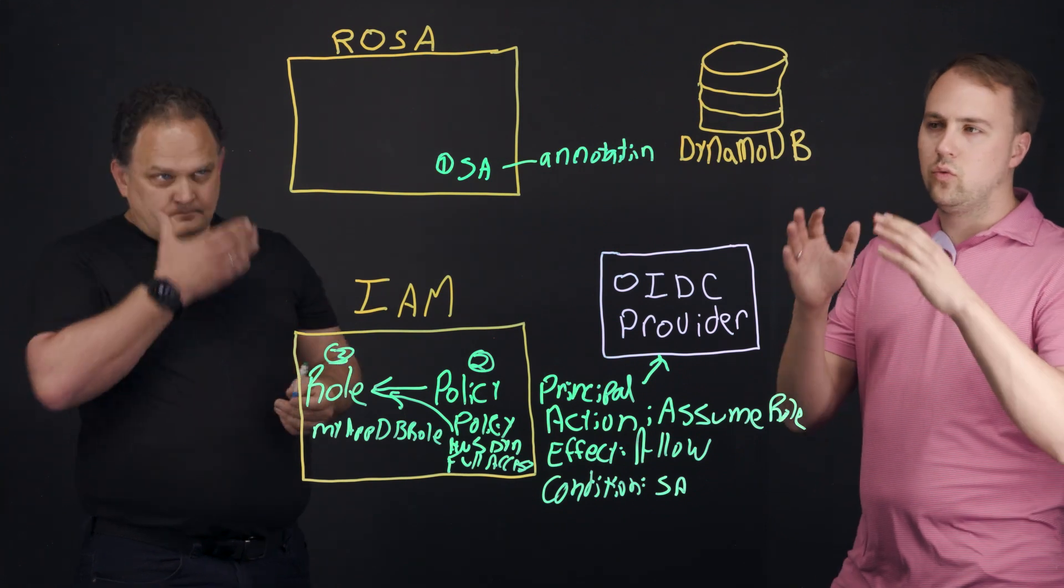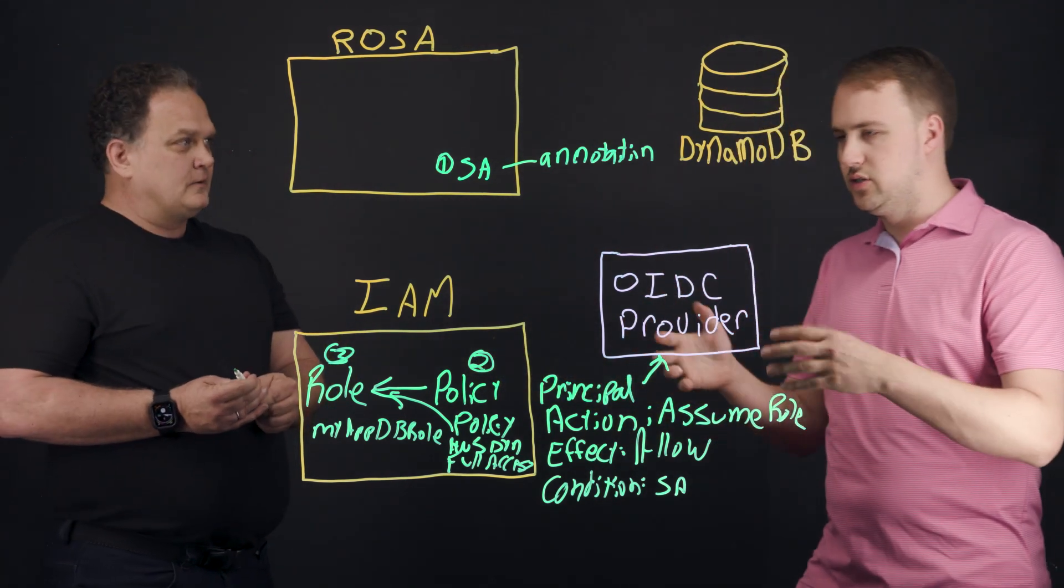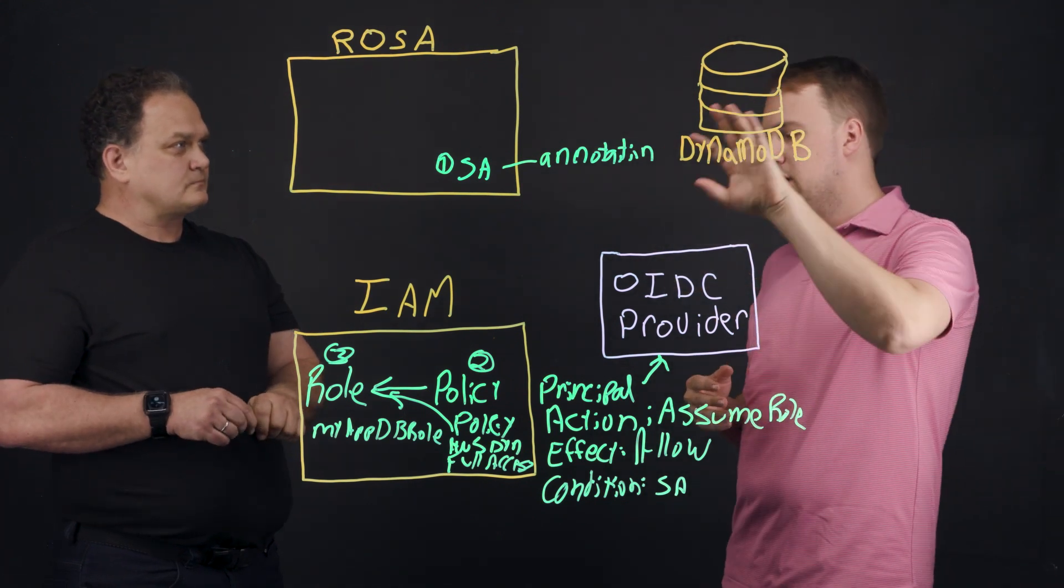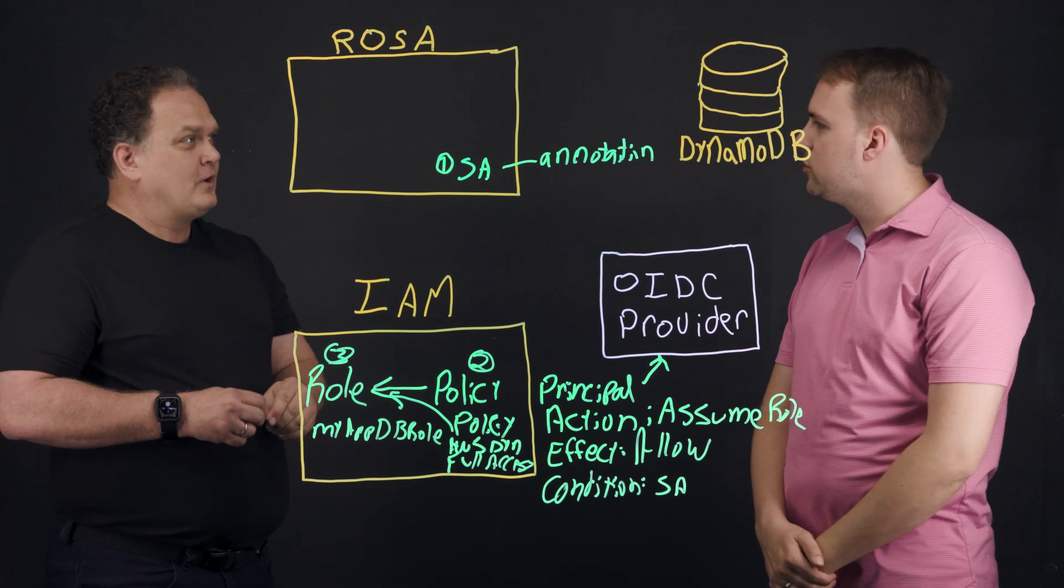Got it. So the annotation says that the role is this, so it knows what to do. But how does this all work behind the scenes? Because an annotation really doesn't actually do anything to the pod that's running.